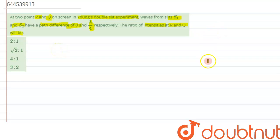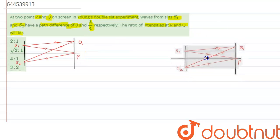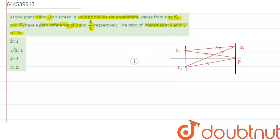Let's understand the given situation. Here we have two points in the general setup of YDSE. Point P is where the path difference between the two waves is 0. At point Q, the waves reaching have a path difference of λ/4.